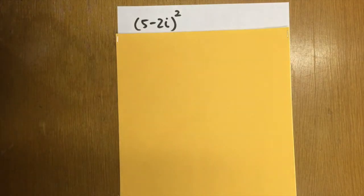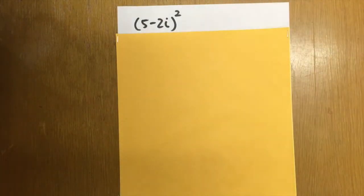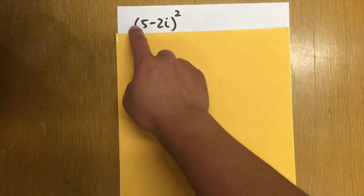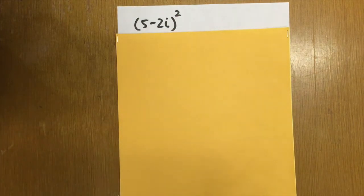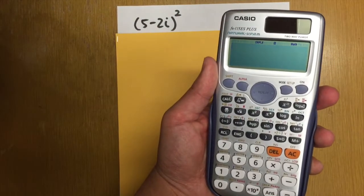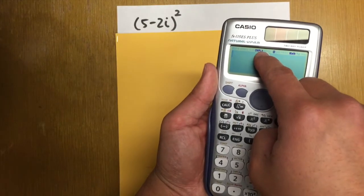Let's say you are in the middle of the semester of your algebra class or maybe toward the end. And then you are going over on how to work out the complex numbers. Such as this right here. Parentheses 5 minus 2i and then raise to a second power. And let me show you how we can do that on the calculator. We are still in the complex mode. So that's good.